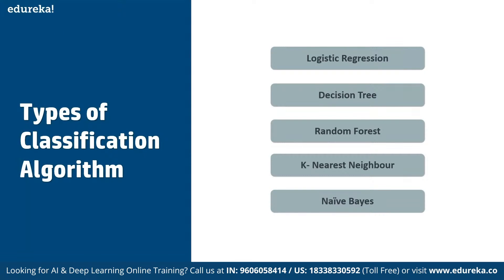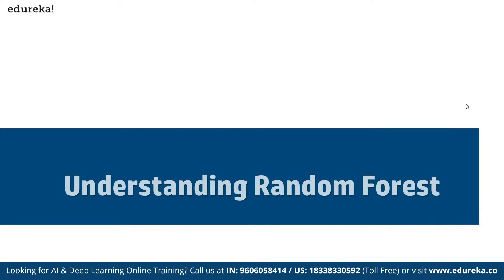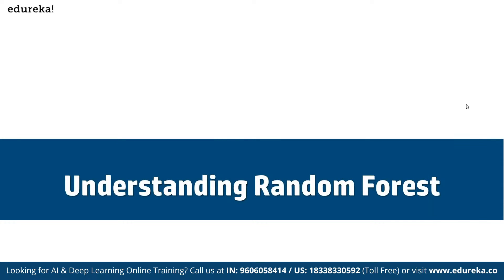In terms of types of classification algorithms, we have logistic regression, decision tree, random forest, K-nearest neighbors, and Naïve Bayes. These are the main classification algorithms we can use to understand and build random forest.